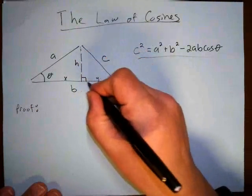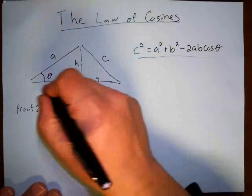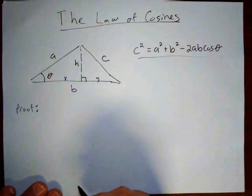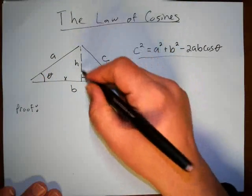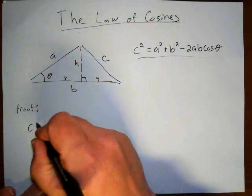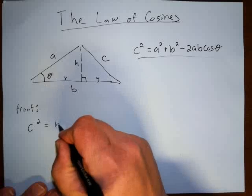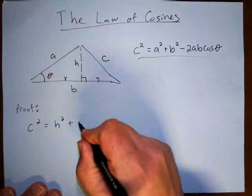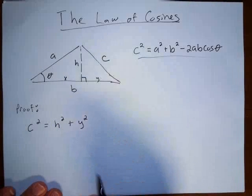I'm going to split side B up into X and Y. This right triangle has a side Y, and this right triangle has a side X. Now using the Pythagorean theorem on this triangle, I get that C squared is equal to H squared plus Y squared.